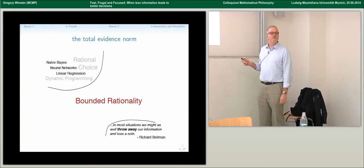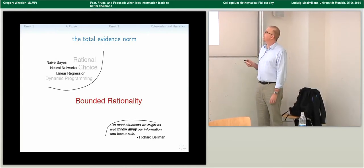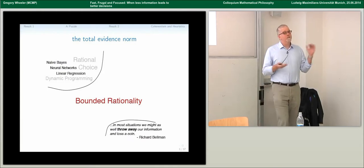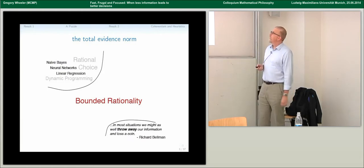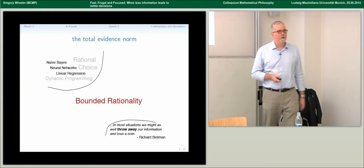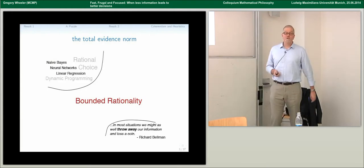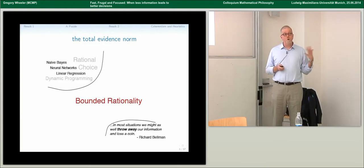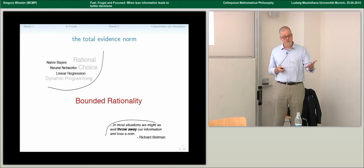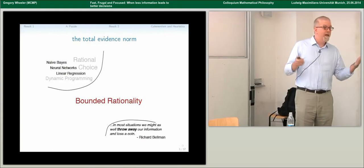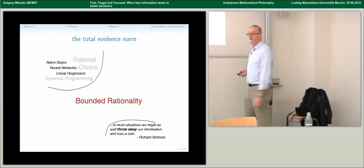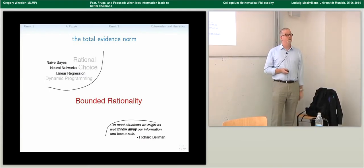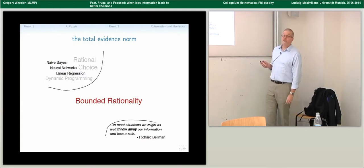Bounded rationality, as it's commonly understood, is that we try to make decisions given limited cognitive constraints, limited time, and limited resources, and what we're trying to do is approximate these ideals. This is Herbert Simon's descriptive phrase — he called the methods and routines people come up with 'satisficing.' They're not maximizing expected utility, but they're doing something else in approximating ideal solutions.